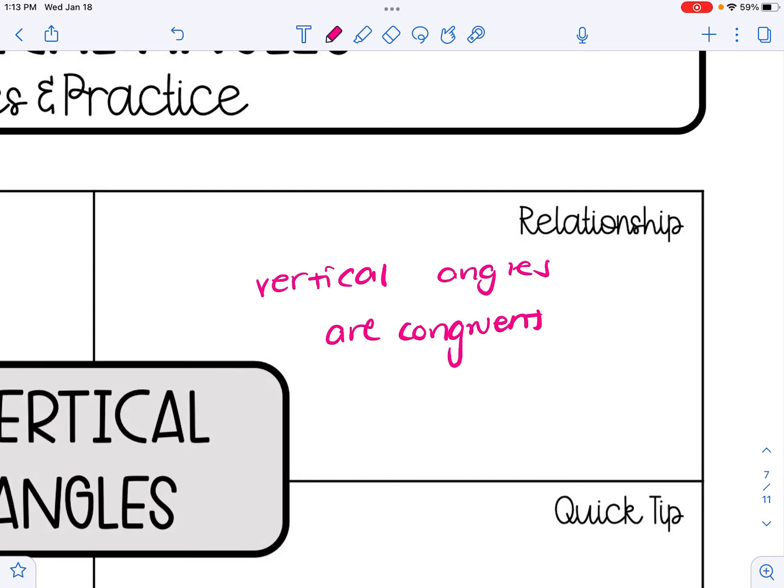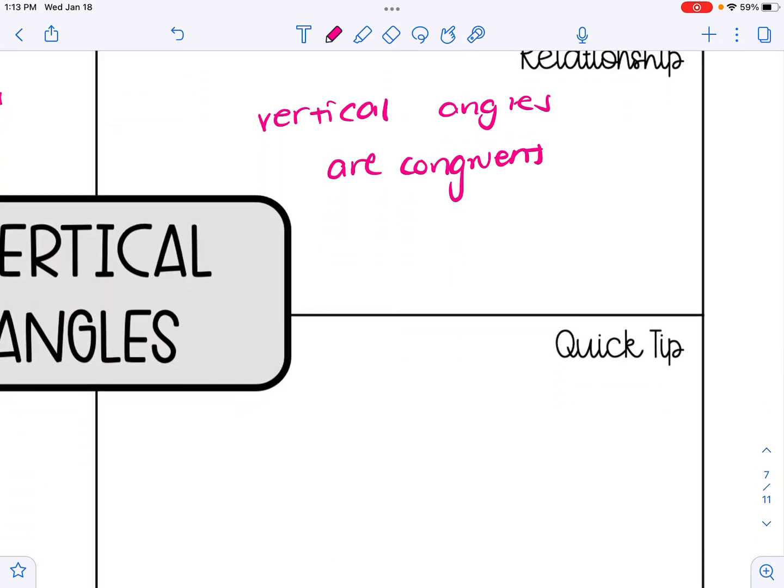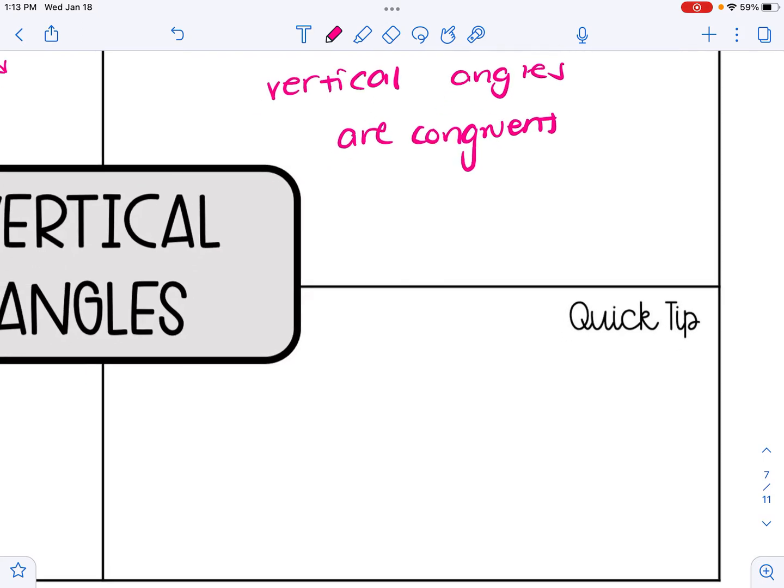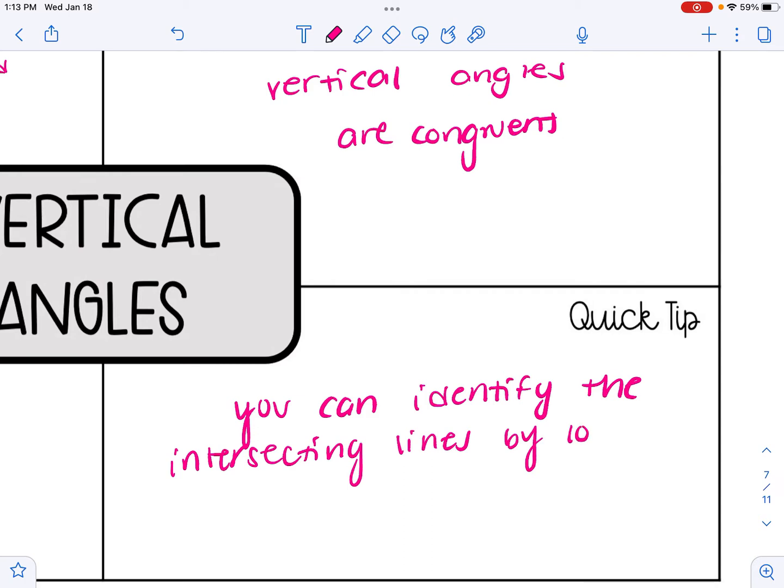Sometimes when we are looking at diagrams, it's helpful to have a quick tip to recognize different angle relationships. My quick tip for identifying vertical angles is that you can look for the intersecting lines by looking for an X shape.